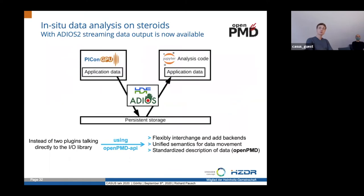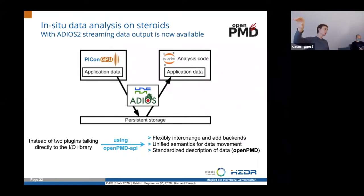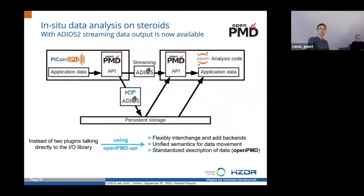The next step is in-situ data analysis using RDMA streaming. Instead of writing data to files, you still need some persistent output to HDF5 files or similar, because you cannot analyze everything on the fly. But with streaming capability going through the openPMD API, you have the option to directly stream to an openPMD API receiver that does analysis on the fly and never has to touch the file system. There will likely be a dedicated talk on this as well.